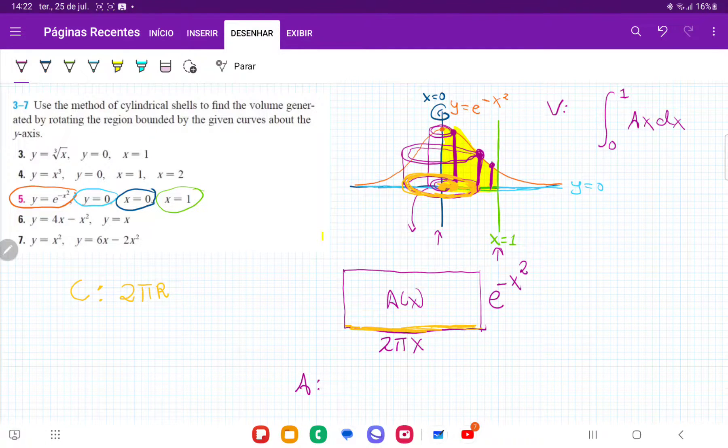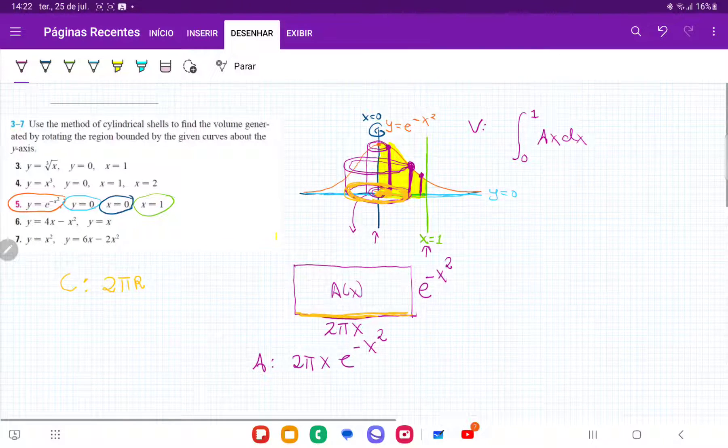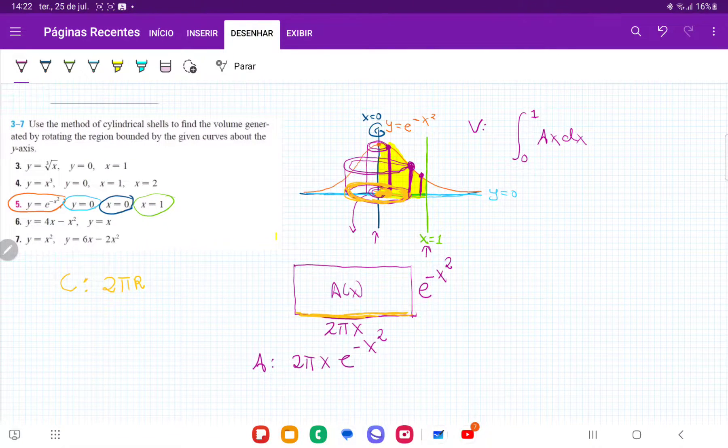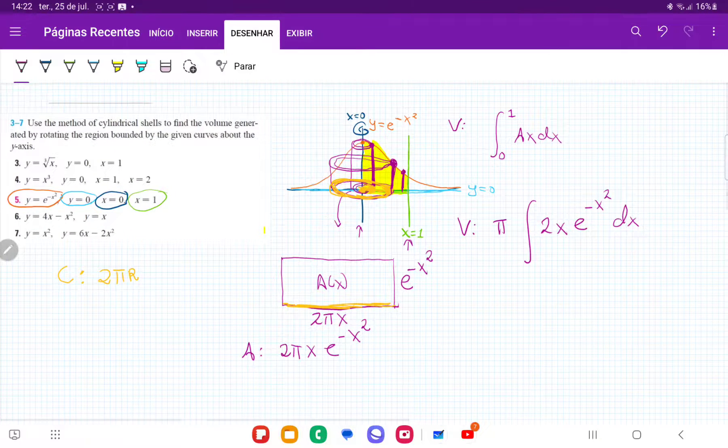Therefore, my area is going to be base times height. So it's going to be 2πx times e to the minus x squared. That's my area. So once I have an expression for an area as a function of x, I'm ready to set up my volume. So I'm going to put the π outside because it's a constant, so it'll give me π. And then this gives me 2x times e to the minus x squared dx.